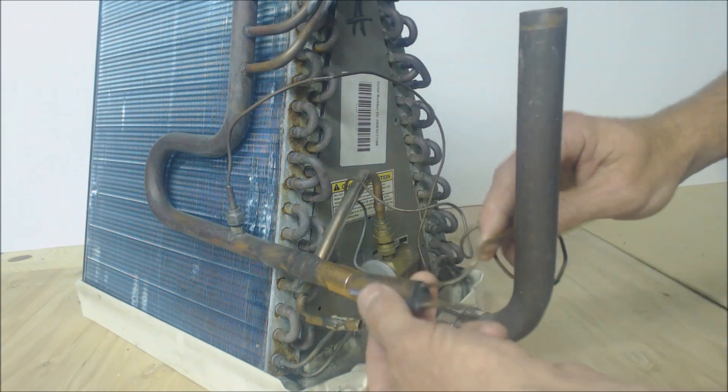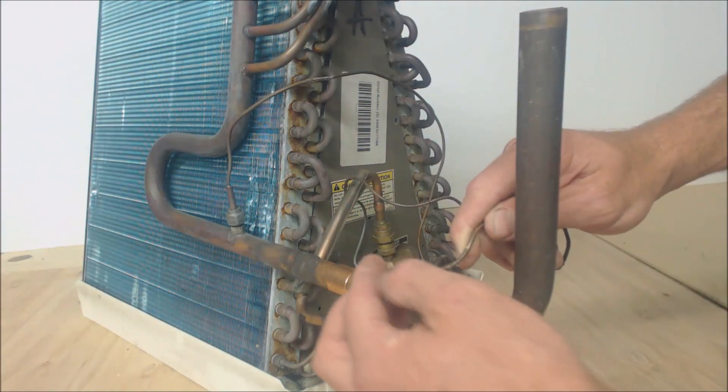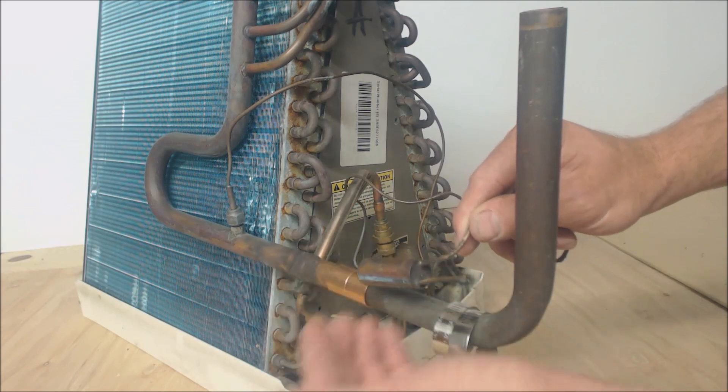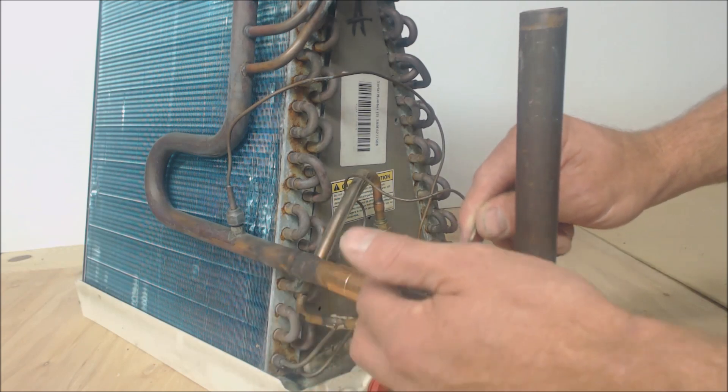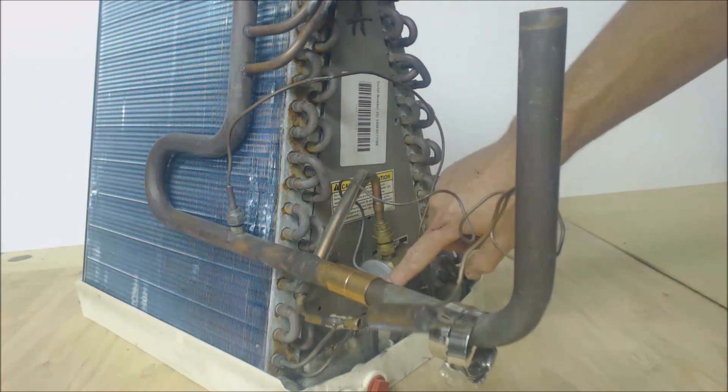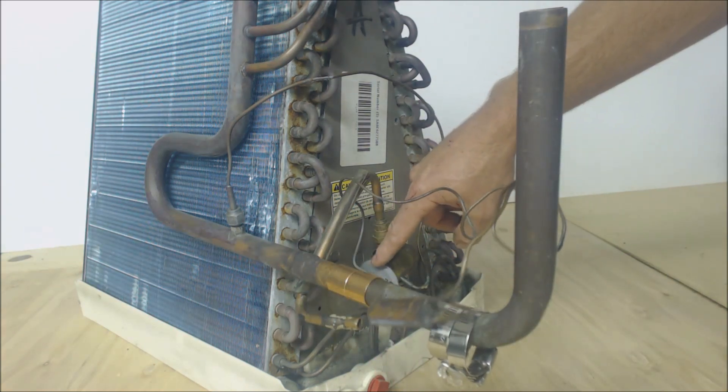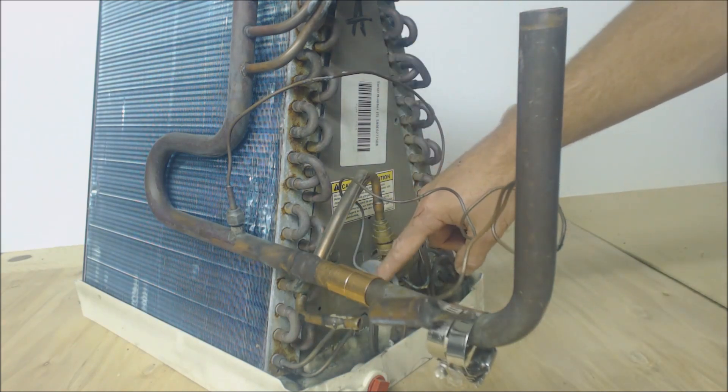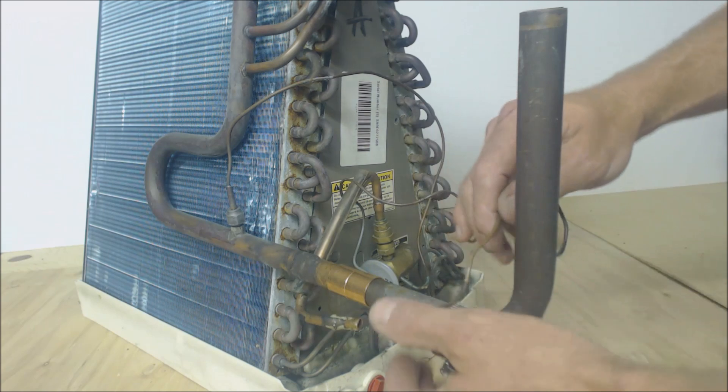All it's really doing is there's refrigerant inside the sensing bulb. When it's cooler, it applies less force on the TXV to open the TXV. When it's hotter, it applies more opening force on the TXV.